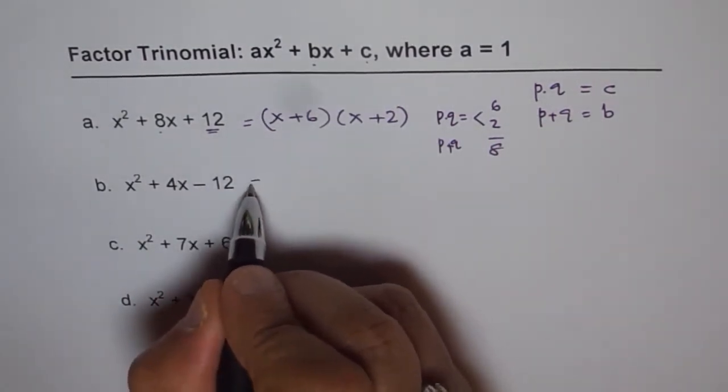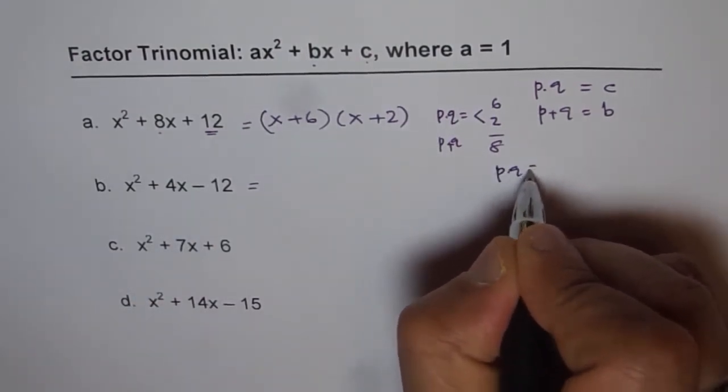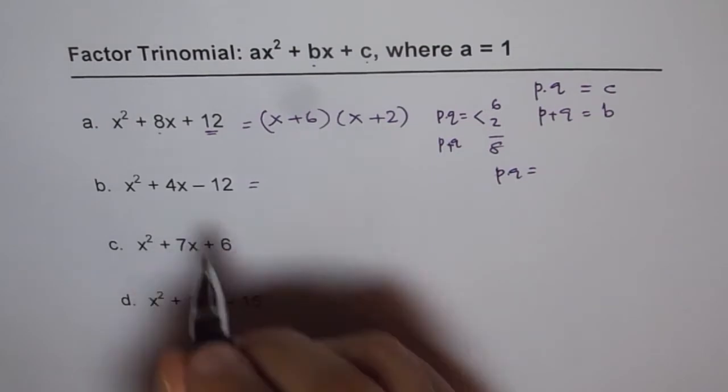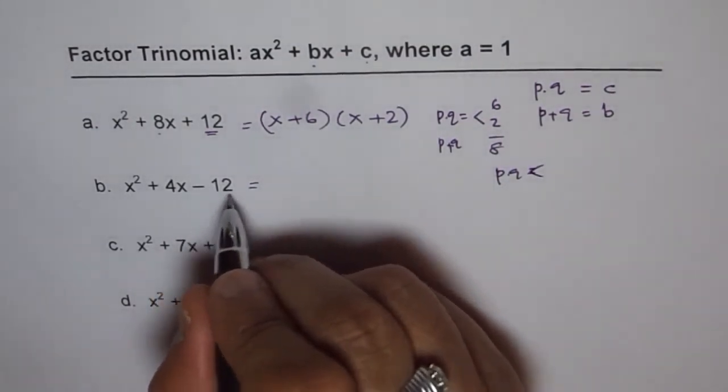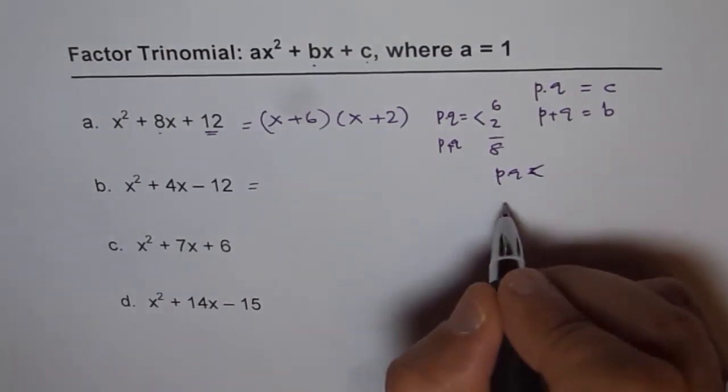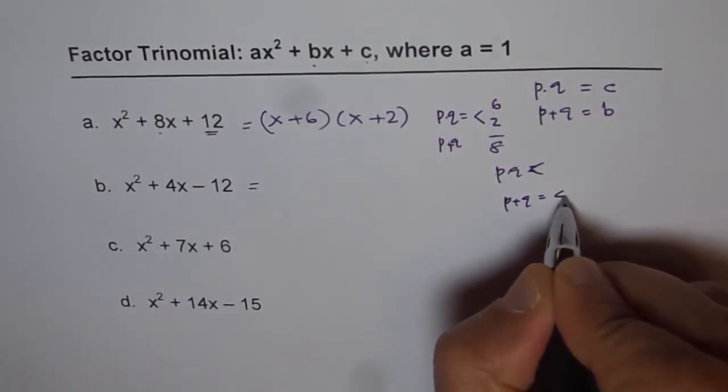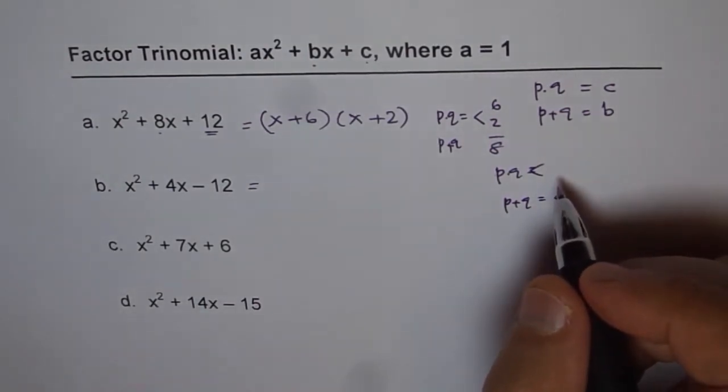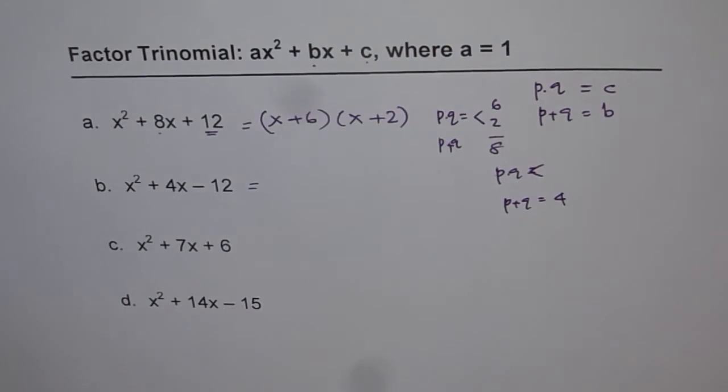Let's do the next one. Here we are looking for two numbers whose product is minus 12. So we are looking for two numbers with product of minus 12 and sum, p + q, of 4. If you have product of minus 12 that means one of them is positive and the other one is negative.